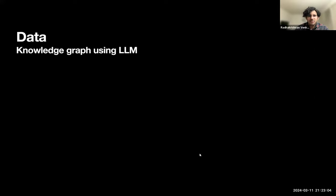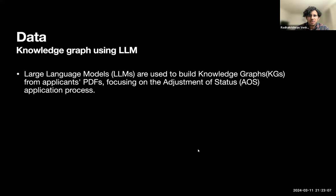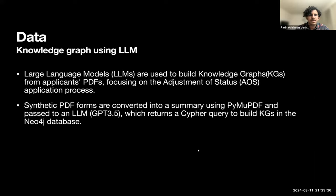The data for our project comprises of applicants' PDFs that have been submitted for the AOS application process, which is adjustment of status. We are using LLMs to build knowledge graphs. The synthetic PDF forms are converted into a summary using a Python library and passed to the LLM by prompting to return a Cipher query that we can use to build a knowledge graph in Neo4j.